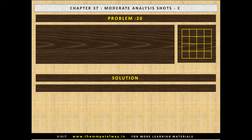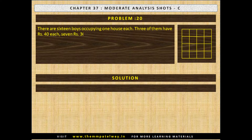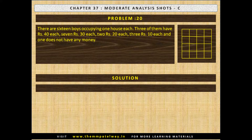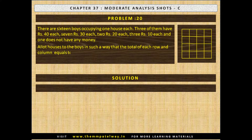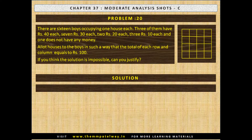Problem No. 20. There are 16 boys occupying one house each. Three of them have Rs. 40 each, 7 have Rs. 30 each, 2 have Rs. 20 each, 3 have Rs. 10 each and 1 does not have any money. Allot houses so that the total of each row and column equals Rs. 100. The solution is not possible; to justify, make possible combinations and check the requirement.